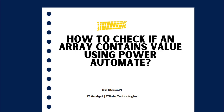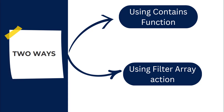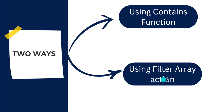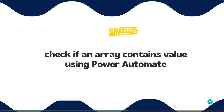Hello everyone, welcome to this YouTube channel. My name is Roslyn and in this video we will see how to check if an array contains a value or not using Power Automate flow. There are two ways we are going to learn: the first approach is using the contains function, and the second way is using the filter array action.